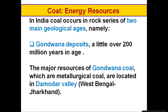In India, coal occurrences are mainly found in two rock series. The first are Gondwana deposits, which date back to over 200 million years ago. The important resources of Gondwana coal are found in the West Bengal and Jharkhand region — the Damodar Valley — which is of immense importance to our country.